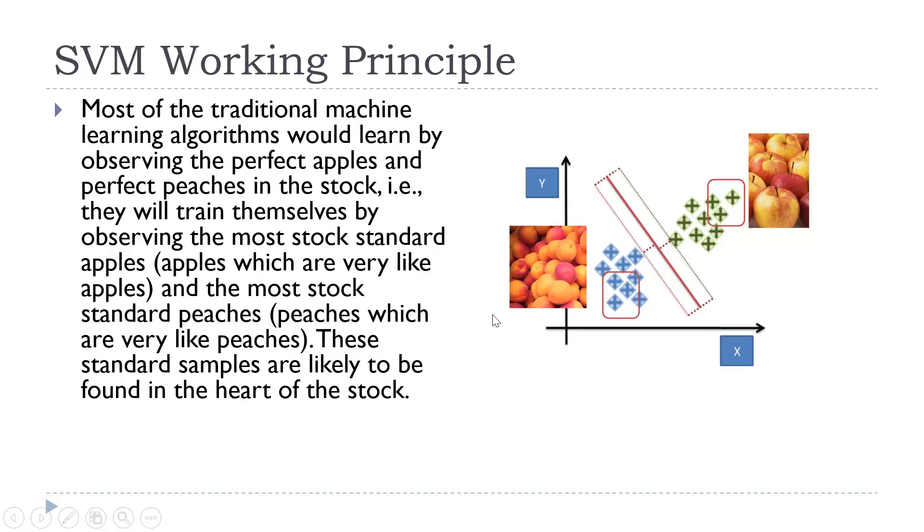The working of SVM is different from traditional machine learning algorithms. The traditional machine learning algorithm will try to learn by observing the perfect apples and perfect peaches in the stock. It means that we are only considering those apples which appear like apples and we focus on those peaches which appear like peaches. These standard samples are likely to be found in the heart of the stock.